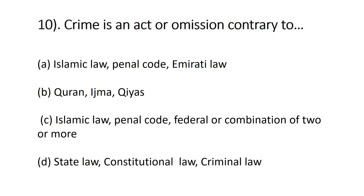Question number ten: crime is an act or omission contrary to — A) Islamic law or penal code, B) Emirati law, C) Islamic law, penal code, federal, and combination of two or more, D) state law, constitutional law. Crime is activity against the law of a country — contrary to Islamic law, penal code, or federal law depending on the country. The answer is C.